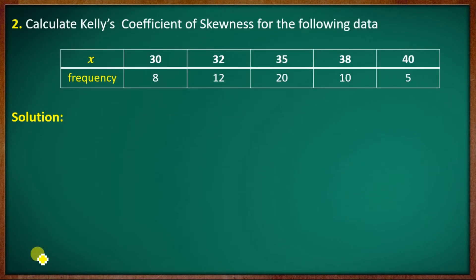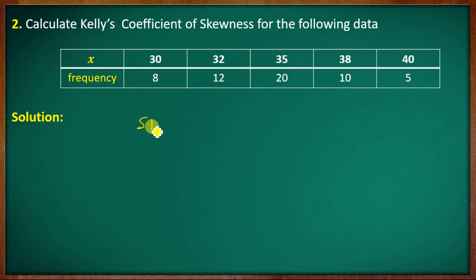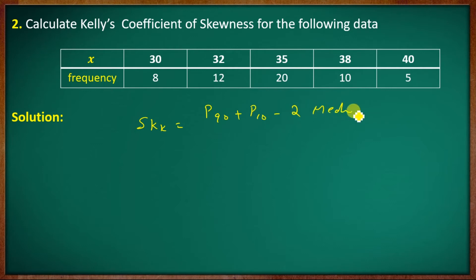Second question: calculate Kelly Coefficient of Skewness for the following data. X values are 30, 32, 35, 38, 40 with frequencies 8, 12, 20, 10, 5 respectively. The formula is P90 plus P10 minus 2 into median, divided by P90 minus P10. This is a discrete frequency distribution, so we use n plus 1 by 100 for percentile positions with cumulative frequency.